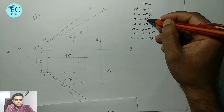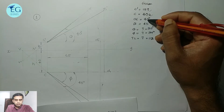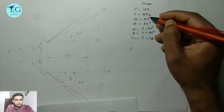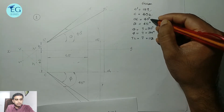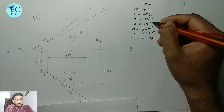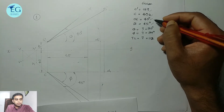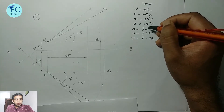Its front view and top view make angles of 40 degrees and 45 degrees respectively with the XY line. That means alpha equals 40 degrees and beta equals 45 degrees.